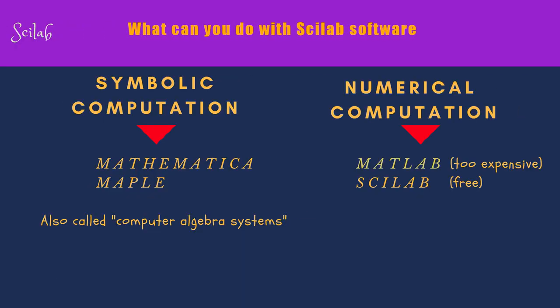Let us first see where Scilab stands in computational software. There are two types of computational software: symbolic computation software and numerical computation software. In symbolic computation, variables are treated as symbols — we manipulate variables without giving them values, just like in algebra. These systems are sometimes called computer algebra systems. For scientific and engineering work, you need numerical computation where you can get decimal values for your variables. In symbolic computation, two very famous tools are Mathematica and Maple. In numerical computation, MATLAB is the market leader with millions of users in many universities and colleges.